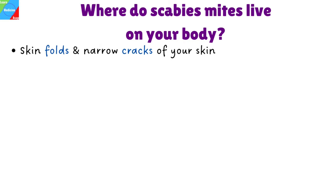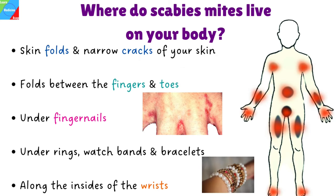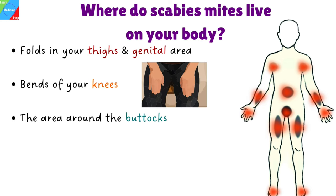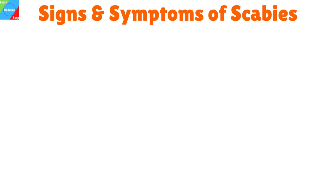Scabies is often found in the skin folds and narrow cracks of your skin. However, they can infest many parts of the body including folds between the fingers and toes, under fingernails, under rings, watch bands and bracelets, along the insides of the wrists, on the inner elbows, around the waist, on the chest, the area around your nipples and breast creases, around the belly button, folds in your thighs and genital area, bends of your knees, and the area around the buttocks.